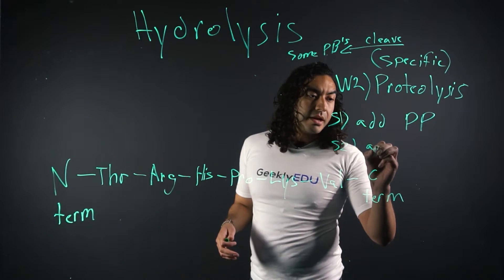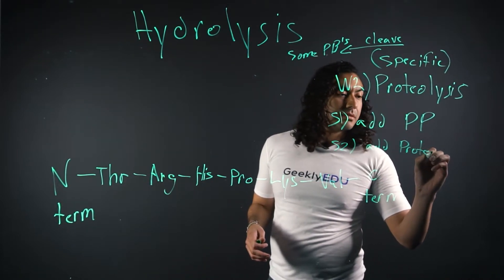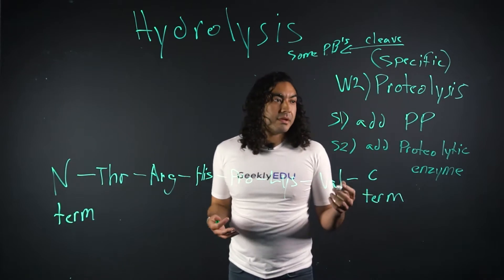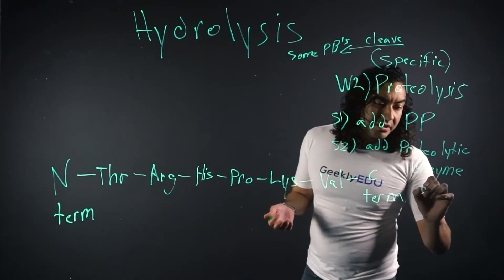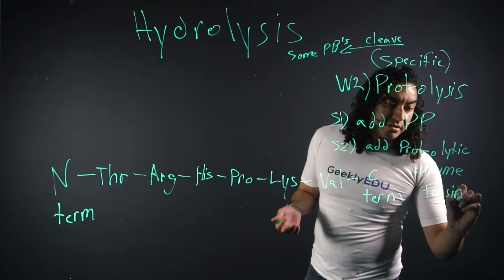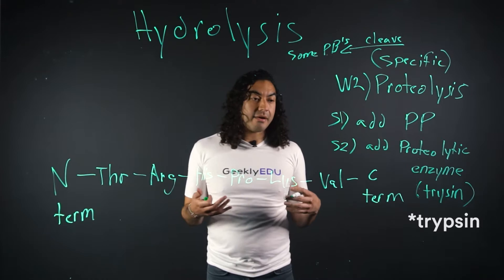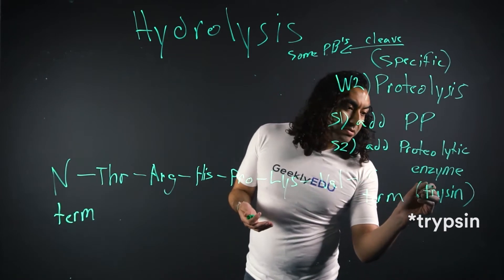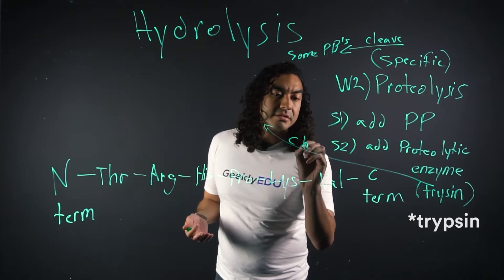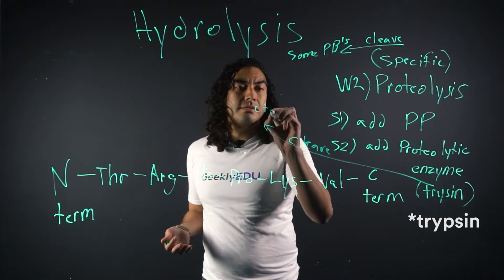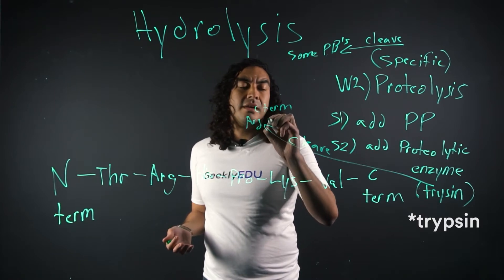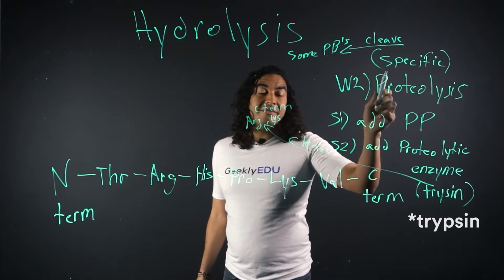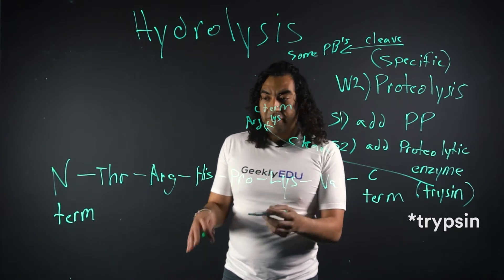Step two now is we're going to add a proteolytic enzyme. So an example of a proteolytic enzyme is, let's say, trypsin. And trypsin is normally found in your stomach and it helps break down food proteins whenever you eat. So it's a good example to use. And what's cool about trypsin is it cleaves on the C-terminal side of arginine and lysine only. So this is what I mean by specific. It cleaves only some peptide bonds of specific amino acids.